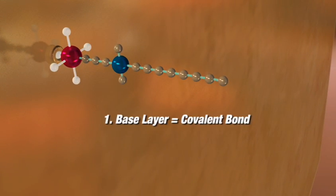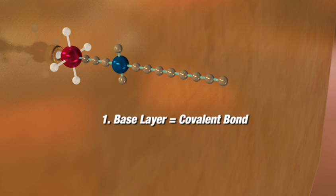First, the base layer is a covalent bond that permanently affixes to the surface, enhancing it for the life of the item it's applied to.